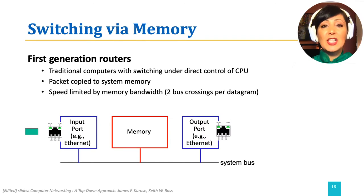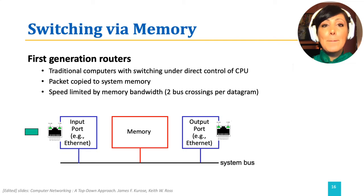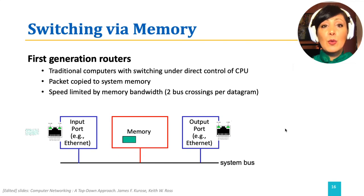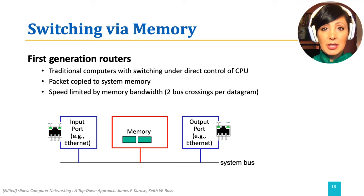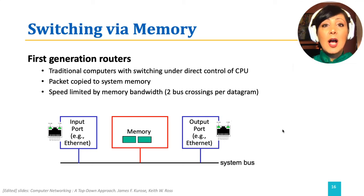Switching via memory is the oldest switching technology, used in the first generation of routers, and is also in use in some modern routers. In these routers, the incoming packet informs the routing processor through an interrupt. The routing processor copies the packet to the system's memory, extracts the packet destination, looks up the forwarding table, and copies the packet to the appropriate output port.